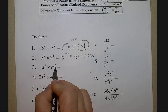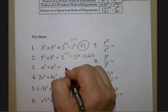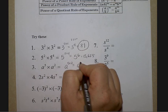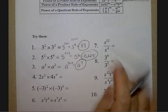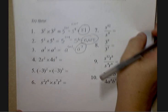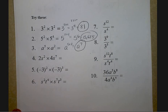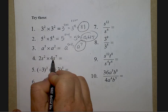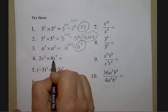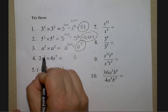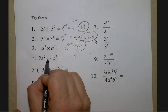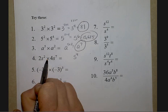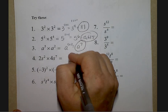Same base again, so this is a raised to the five plus two, which is seven. This next one is slightly different because now we have a coefficient in front of both variables. Since they are the same variable, let's first take care of the variables: s to the two plus seven, because when you're multiplying with the same base you add — two plus seven is nine. Now multiply the coefficients: two times four is eight.